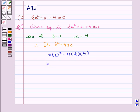This implies D equal to 1 square minus 4 into 2 into 4. So, this gives D equal to 1 minus 32.